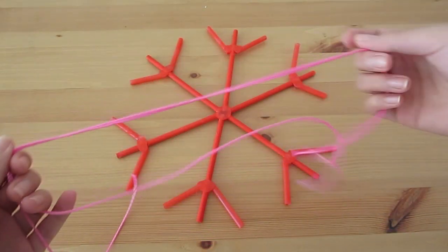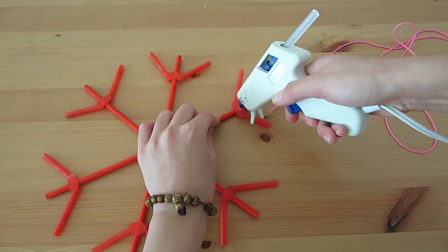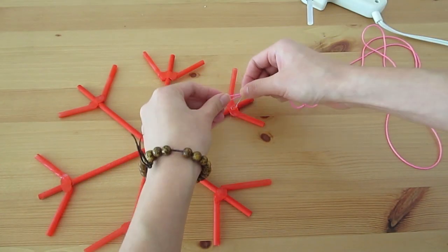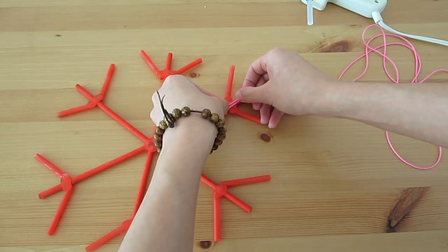To hang it up on a wall, fold a piece of string in half and glue it neatly onto the tip of the snowflake. And there you have it.